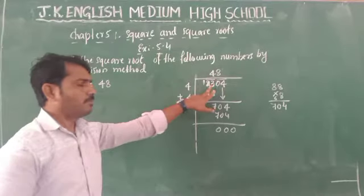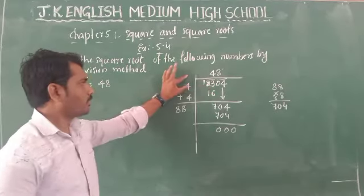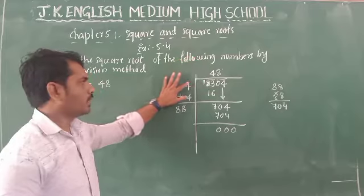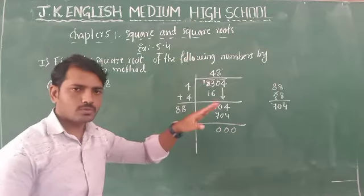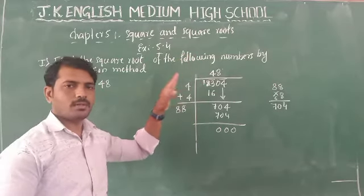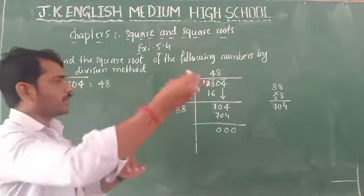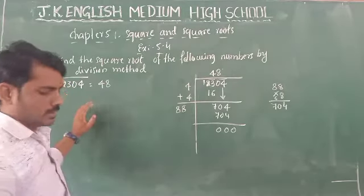Once we get the remainder as 0, this number is a perfect square. The square root of 2304 is 48. To summarize the steps: first make the groups, then take the largest perfect square number equal to or less than the first group — do not take more than the number — write the answer, and proceed.